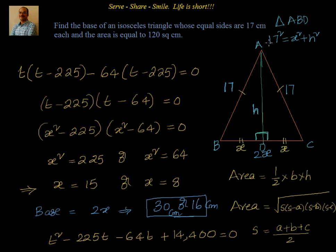If the sides of the triangle were not equal we would go for Heron's formula, and the problem would be a little more complicated. Here, applying Heron's formula would also be easy since it's isosceles. But for a scalene triangle it becomes more complicated. This is the easy version of the problem where we have an isosceles triangle and we have to find the base.